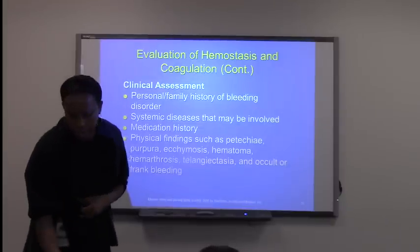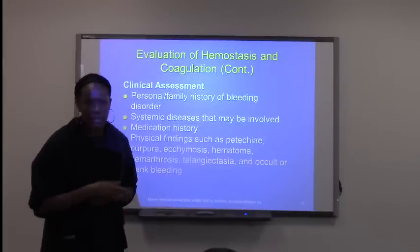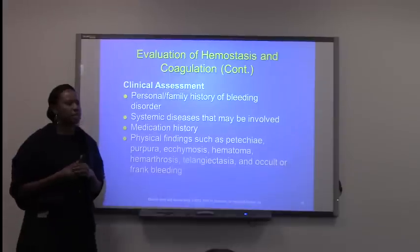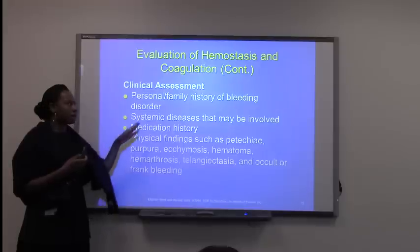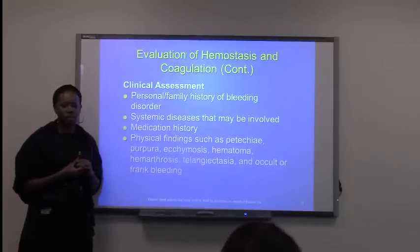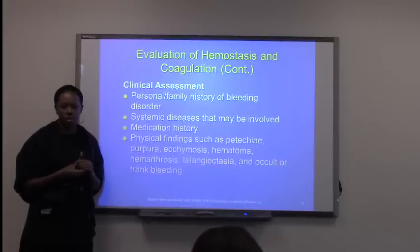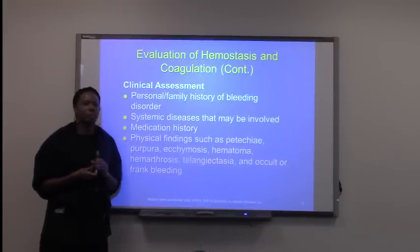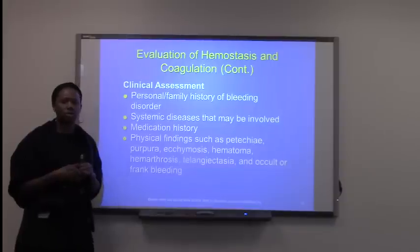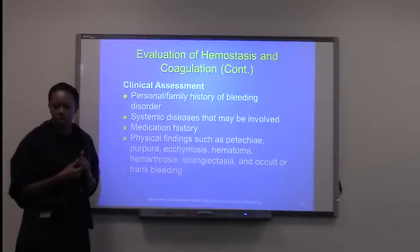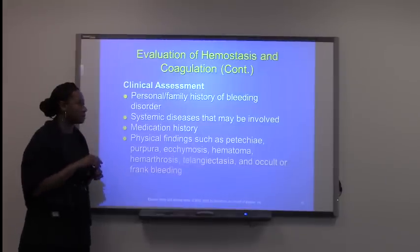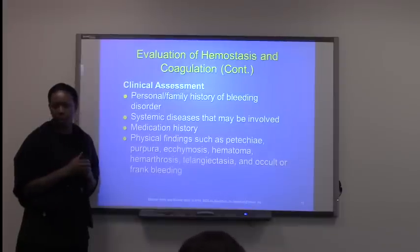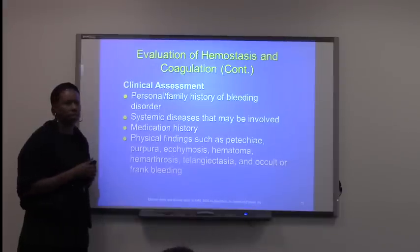Systemic lupus is another condition that can cause coagulation issues. Any type of malignancy should also be considered, because when patients have cancer, they can have problems with hemostasis due to bone marrow suppression and lack of clotting factors.